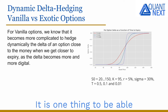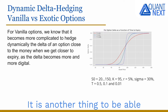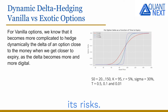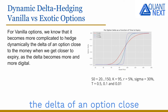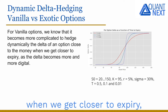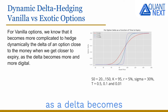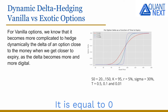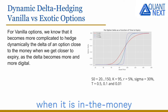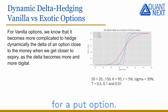It is one thing to be able to price an option; it is another thing to be able to hedge it and to manage its risks. For Vanilla options, we know that it becomes more complicated to hedge dynamically the delta of an option close to the money when we get closer to expiry, as the delta becomes more and more digital. It is equal to zero when it is out of the money and equal to minus one when it is in the money for a put option.